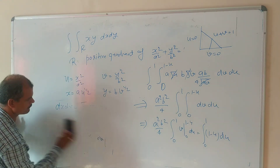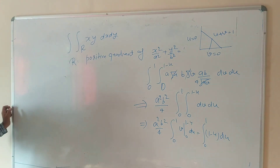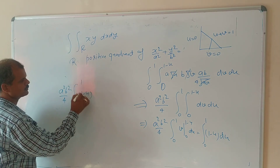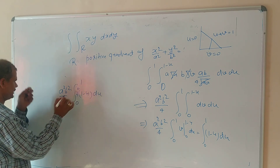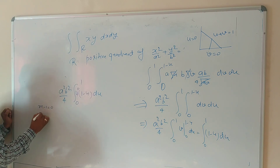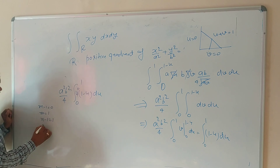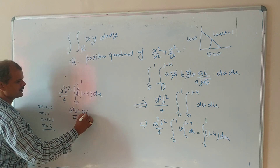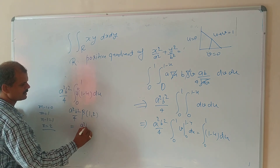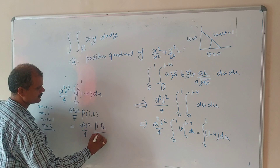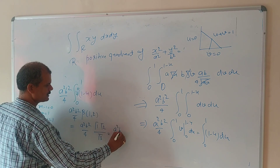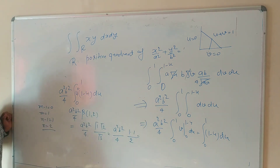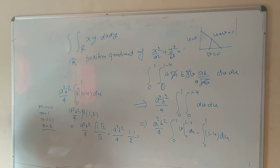Here u has power 0, so m−1 equal to 0 giving m equal to 1; and (1−u) has power 1 so n−1 equal to 1 giving n equal to 2. So we evaluate Beta(1, 2), which equals Gamma(1)·Gamma(2)/Gamma(3) = (1·1)/2. Therefore the answer is a²b²/4 times (1/2), which gives a²b²/8.